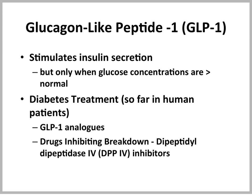In humans, it's not the actual hormone that is used for treatment, because that hormone is broken down very rapidly. So in people, they use GLP-1 analogs, which are metabolized more slowly. Or they are treated with drugs inhibiting the breakdown of GLP-1. These drugs are called DPP-4 inhibitors.